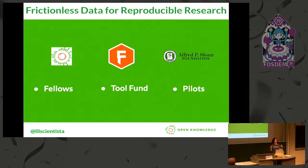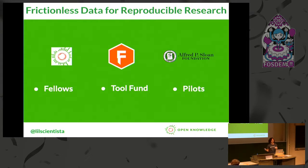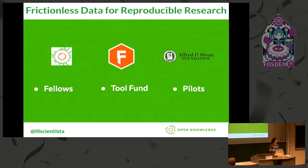We have three main ways that we collaborate. We have the Fellows Program, where we're working with early career researchers to teach them about open science and data management and using the frictionless tools. We have the Tool Fund, where we're working with developers to develop new tooling for reproducible research based off of frictionless data — we're about to open up another round of this, so stay tuned, we give funding to people. And then we also have the Pilots, which are very intensive one-on-one collaborations between us and our developers and researcher teams to help solve data workflow issues. We're actively looking for new pilot collaborations, so if you're interested, please come talk to me.